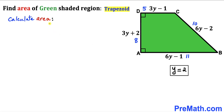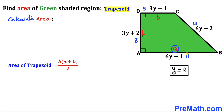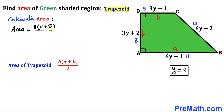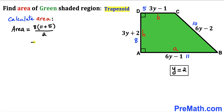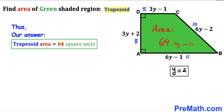Now let's calculate the area of trapezoid ABCD using the formula: Area = H × (A + B) / 2. Base A is 11, base B is 5, and height H is 8. So Area = 8 × (11 + 5) / 2 = 8 × 16 / 2 = 128 / 2 = 64. The area of this green trapezoid ABCD is 64 square units.